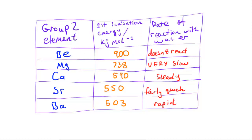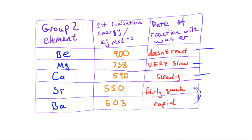Beryllium is very unreactive — if you add it to water on its own, it's pretty much not going to react. Magnesium reacts slowly, calcium reacts steadily, and the other two — strontium and barium — react very quickly.